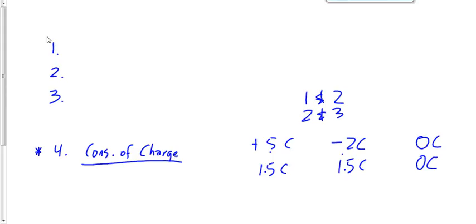What does the charge on each of 2 and 3 become after those two touch each other? The total charge between 2 and 3 is 1.5 and 0, giving a total of 1.5. That divides evenly: 0.75 and 0.75. Sure, it's possible to have 0.75 coulombs — you don't have to have a whole coulomb any more than you have to have a whole kilogram.